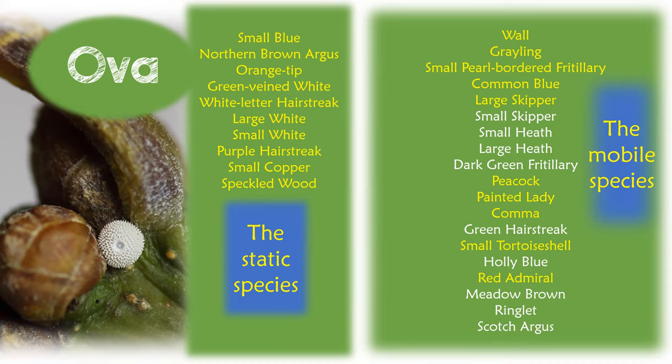The static species are species where I can find the egg without the need for the adult female to show me where. After a while you do begin to pick up unknowingly a sixth sense, and finding them becomes easier. The mobile list contains species where following the female during flight season can lead you to the egg, the habitat, the food plants, and the microclimate suitable for her decisions. You'll notice after a few years that butterflies tend to lay eggs in roughly the same places each year given the habitat remains undisturbed — if it ain't broke, why fix it.